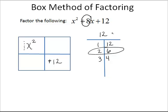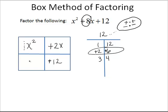Let's think about this for a minute. The only way to get a positive 12 when multiplying is if you have a positive times a positive, or a negative times a negative. We know that 2 and 6 must add up to equal a positive 8, so we don't need negative values — negative 2 plus negative 6 would give us negative 8. Therefore, we have a plus 2 and a plus 6. We write these in the remaining boxes as plus 2x and plus 6x.